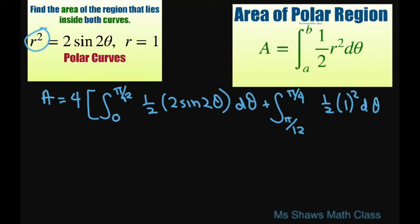So this is going to give us, if you integrate this part, you multiply these two, this is going to be 2. You integrate this, you're going to get cosine of 2θ, but it's going to be negative. And we want to evaluate this from 0 to π/12.